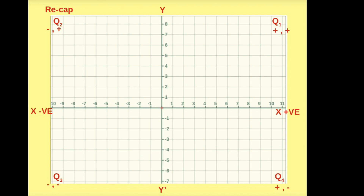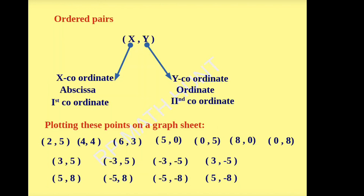Ordered pairs: x comma y. In the ordered pair (x, y), x is said to be the x-coordinate and y is said to be the y-coordinate. The other names: x-coordinate is also called abscissa, y-coordinate is also called ordinate. The first coordinate is x and the second coordinate is y.